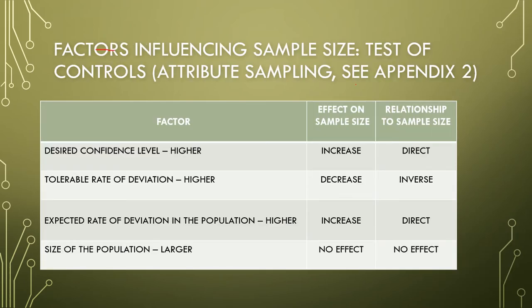Factors influencing sample size in regard to attribute sampling: if the auditor desires a higher confidence level — meaning the auditor wants more assurance that controls are operating effectively — there is a need to increase the sample size. This is a direct relationship.